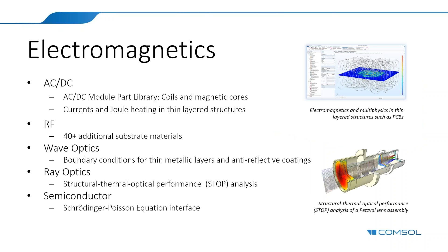On the electromagnetic side in the AC/DC module, there is a new part library with many parameterized coils and magnetic cores. This is important because defining this type of geometry yourself is quite cumbersome. There is also new support for thin layered structures in the AC/DC module, and you can combine the AC/DC module with the Heat Transfer Module to compute Joule heating in layered structures like PCB boards. This uses the same layered material functionality found in the Composite Materials Module.